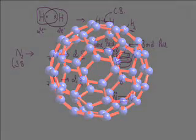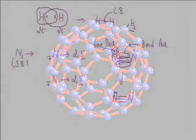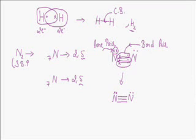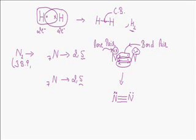Bond pairs (BP) and lone pairs in nitrogen: each nitrogen atom has a pair of electrons which doesn't participate in bonding, so each nitrogen atom contributes one lone pair. There will be two lone pairs in the molecule of nitrogen, along with three bond pairs.